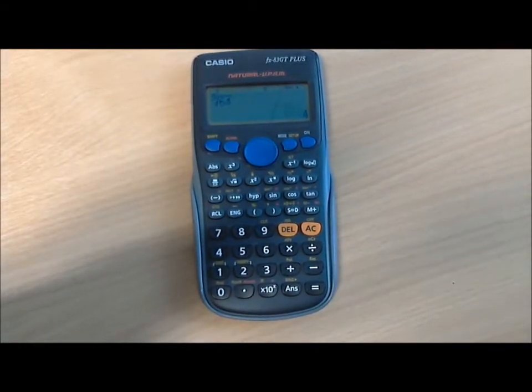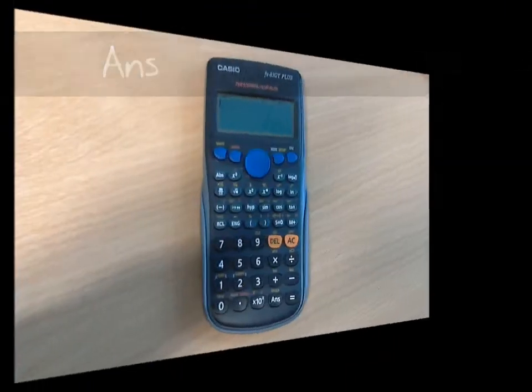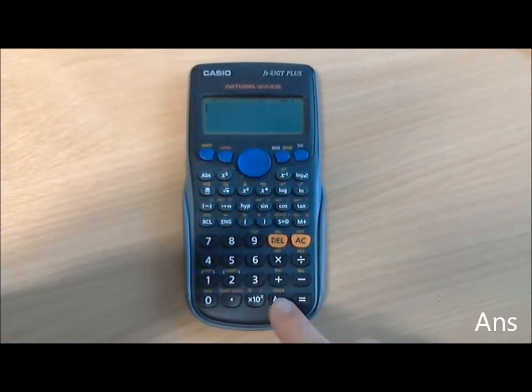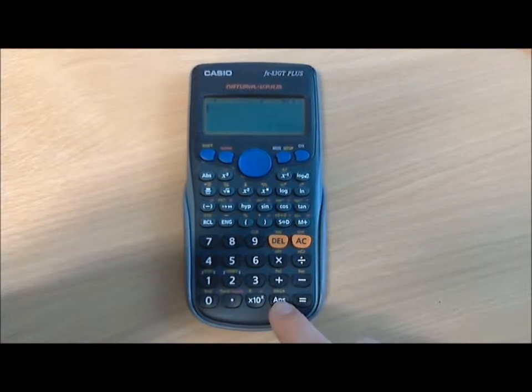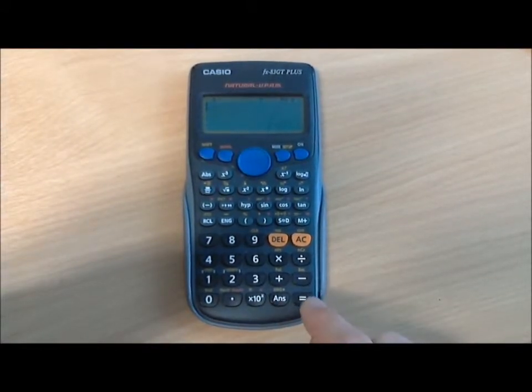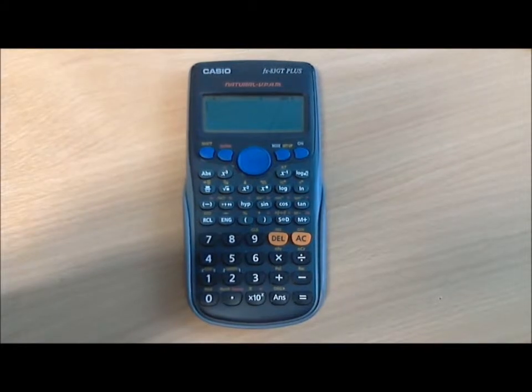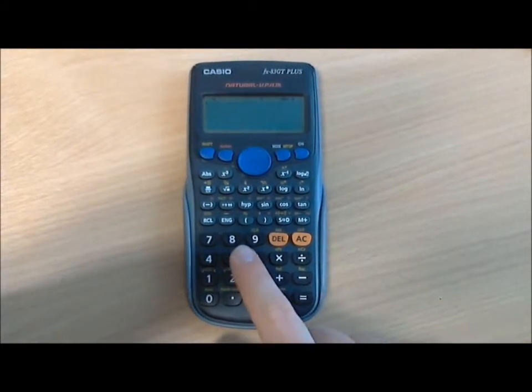Sometimes it's useful to use the ANS button, which is a temporary memory in your calculator that stores whatever number is on the screen after you've hit the equals sign. For example, say we do 5 multiplied by 6 and hit equals, it's 30.